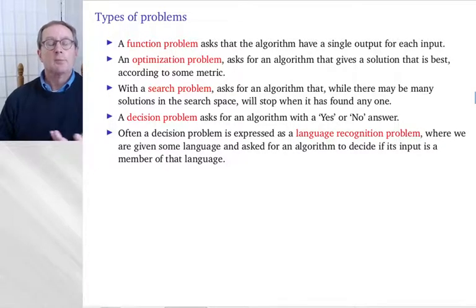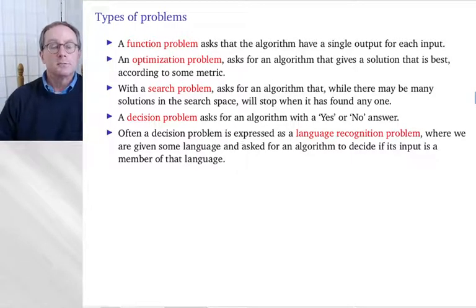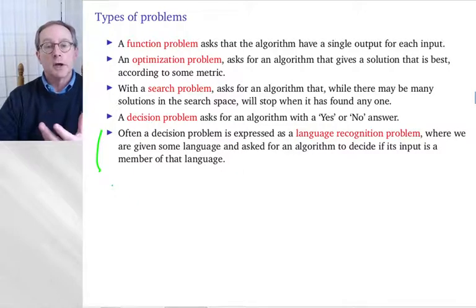You might remember the Entscheidungsproblem from the very first slide, very first video, very beginning of the course, when we talked about a decision problem for mathematics. You type in a statement for mathematics and beep, beep, buzz, buzz, the machine, ding, out comes yes or no, that statement is true. Now, the most important class of problems here on the slide, they are all important, but the most important for us will be, often a decision problem is expressed as a language recognition problem. As a language recognition problem, where we are given some language and ask for an algorithm to decide if its input is a member of that language. So this might remind you of, for example, automata questions, where we were trying to decide whether the input string is a member of the language, and this is one of the reasons why we express things in that way, is that we are trying to ask questions that are sort of uniform across the chapters. There are many reasons to go with language recognition problem. They are not the only problem, but there are many reasons for us to go with language recognition problem, and that is one of them.